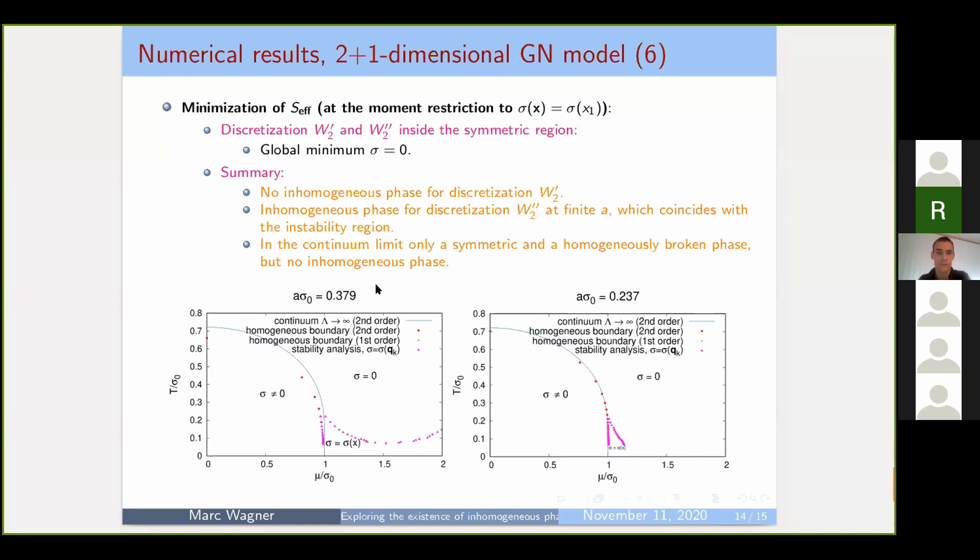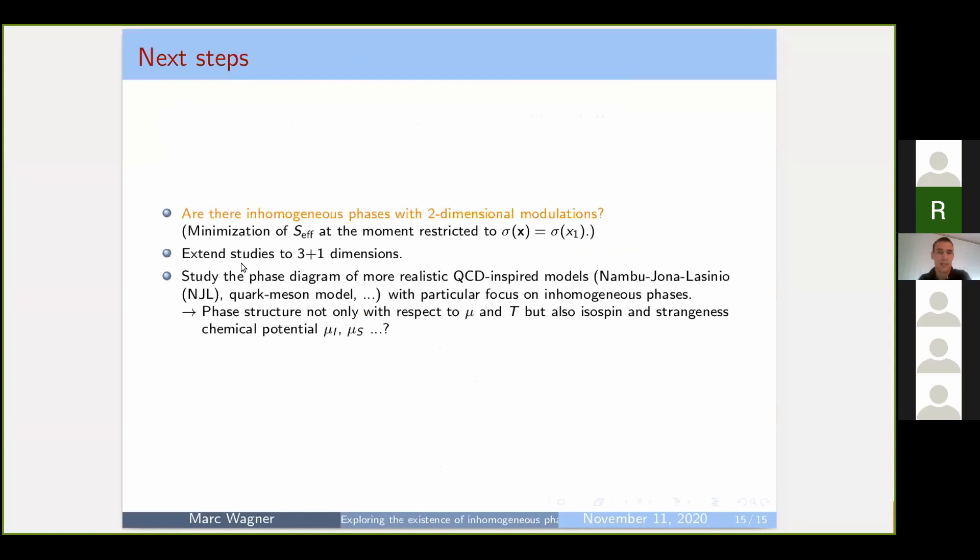The only thing left to do in this project, in my opinion, is to extend the minimization to two-dimensional modulations. This is computationally quite demanding, so we didn't do it, but we're in the process of improving our algorithms. Then this goes more into the discussion sessions—we're thinking what kind of models to study next. What is most promising with respect to finding perhaps inhomogeneous phases or also to make some contact to QCD? What kind of models seem to be most realistic? I think we'll discuss it anyway later. So thank you very much.